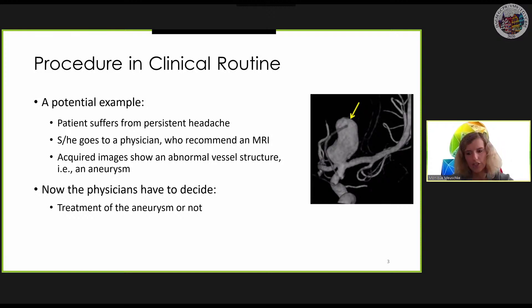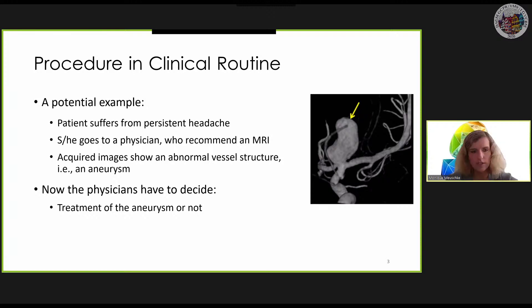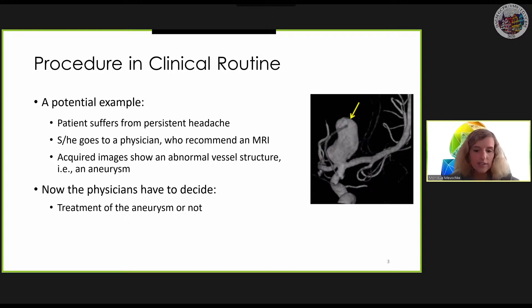The decision whether to treat or not is essentially based on the size and the location of the aneurysm, so larger aneurysms on certain arteries are usually treated. However, these criteria do not allow a reliable assessment of the risk of rupture. In addition, aneurysms rupture very rarely, but the reasons for rupture are poorly understood, and patients are afraid to live with an aneurysm — so they are usually treated, although this would often not be necessary.